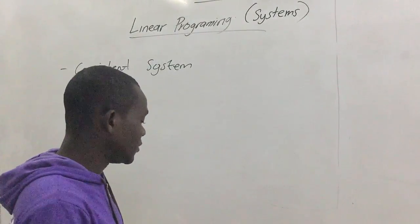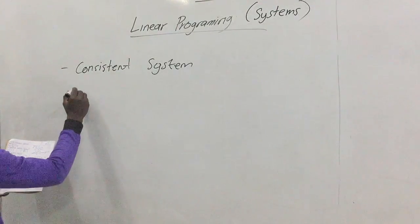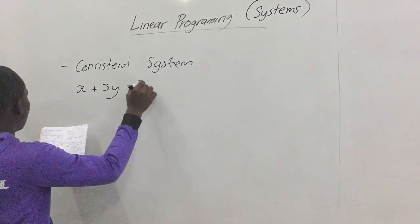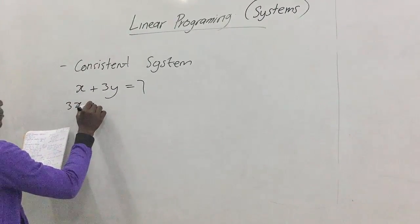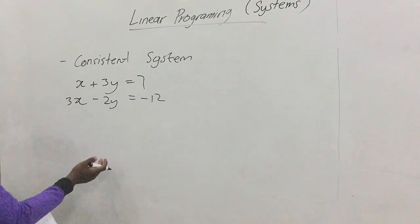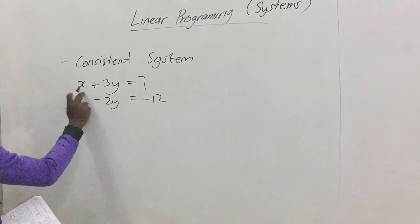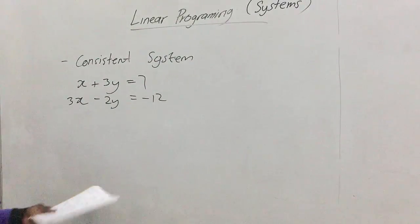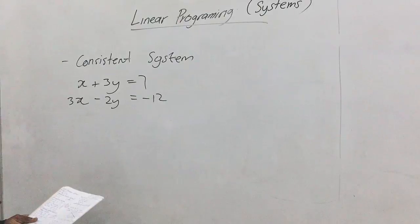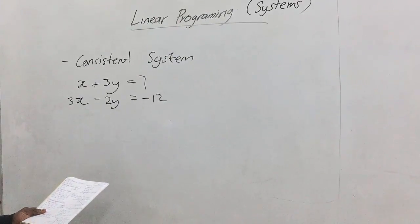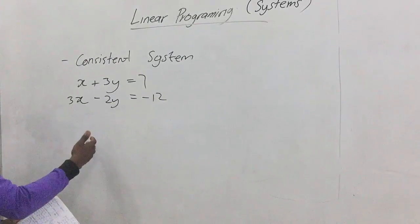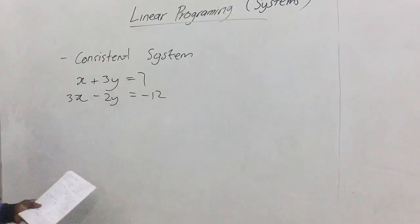For example, when we have these two equations — x plus 3y equals 7, and 3x minus 2y equals negative 12 — and we have been asked to find the values of x and y that satisfy these two equations, we have various methods we can use. That's the simultaneous equations method, so let's use that to find values for x and y that satisfy both equations.